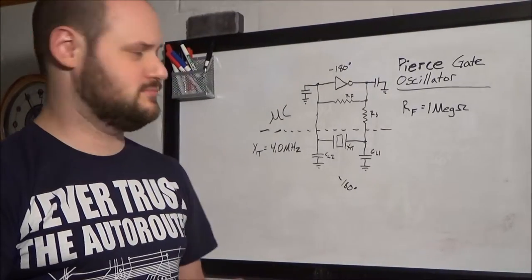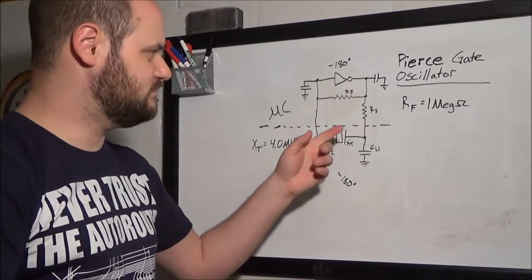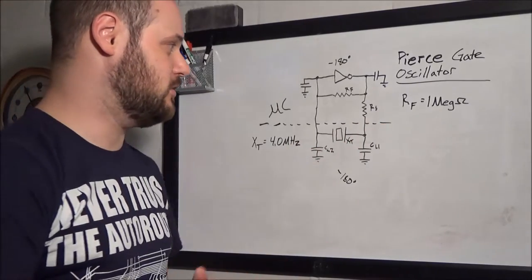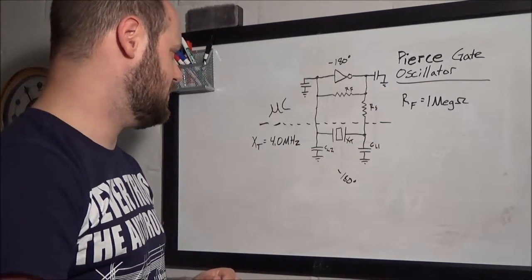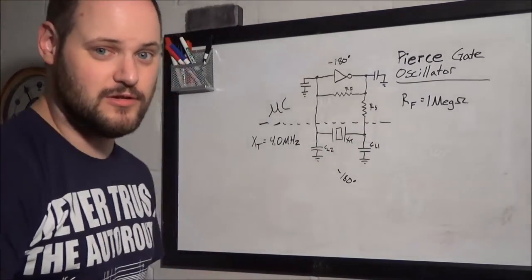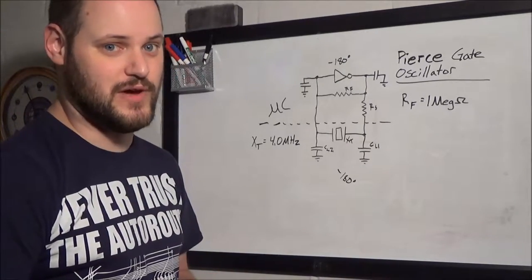So, a typical oscillator of, say, in this instance, 4 megahertz, 1 megohm is a good value. But, if you were to go up to, say, 20 megahertz, 470K would probably be a more typical value. If you're going down to watch crystal type, 10 to 15 megohms would be pretty common.